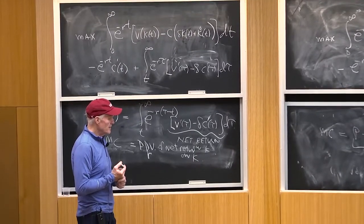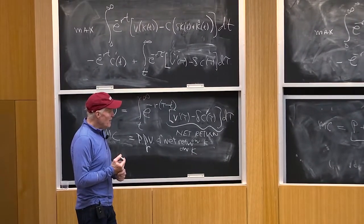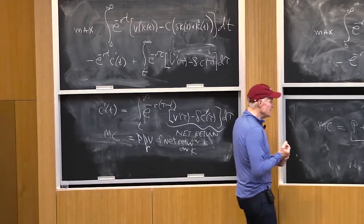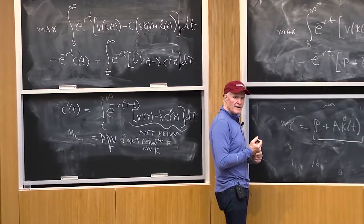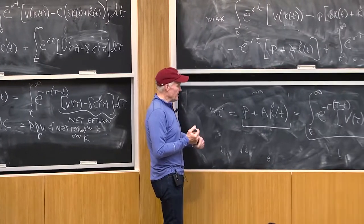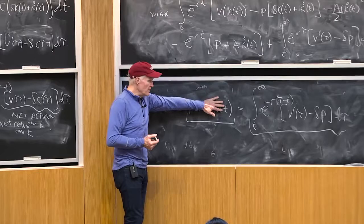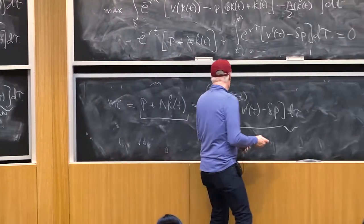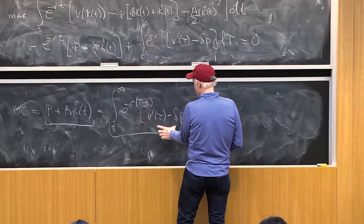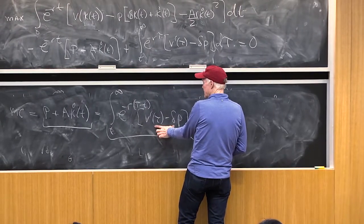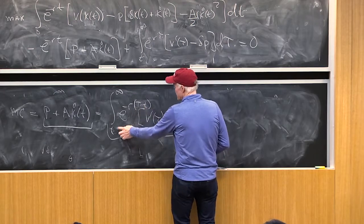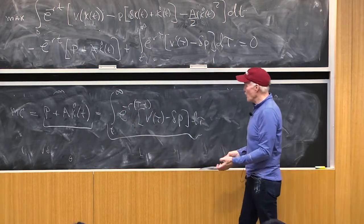Alright, but now think about the steady state properties of this model. What is this steady state going to look like? How do we find the steady state? We just set k dot equal to zero. And the steady state is going to be, what's the integral of this thing in a steady state? Well, that's a constant. So what's the integral of e to the minus r times tau minus t from t to infinity? That's just 1 over r.